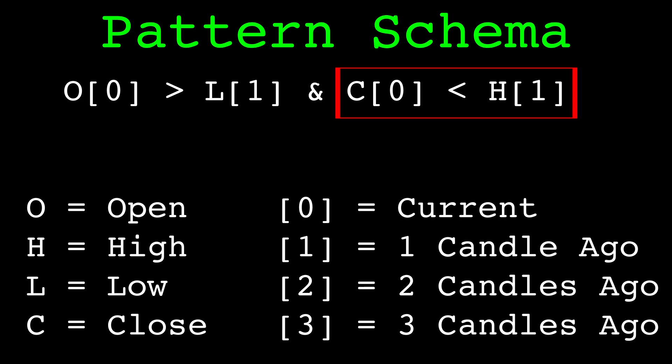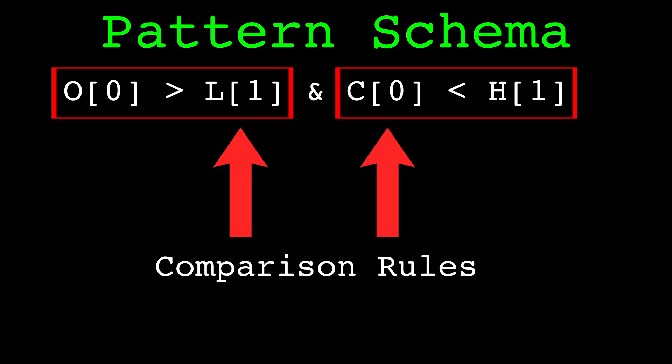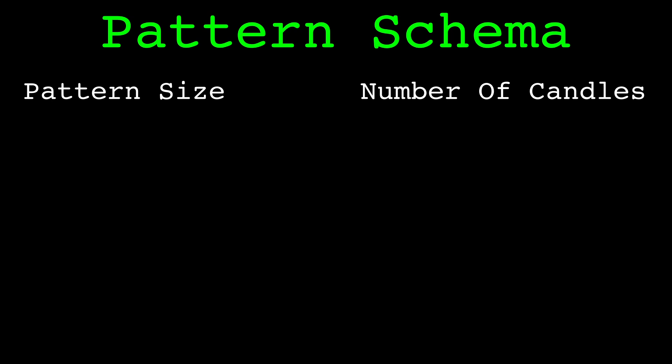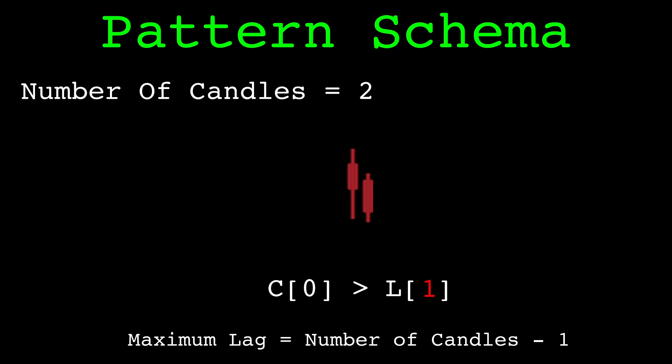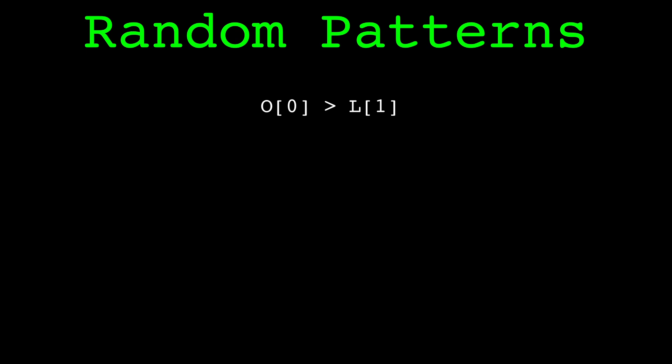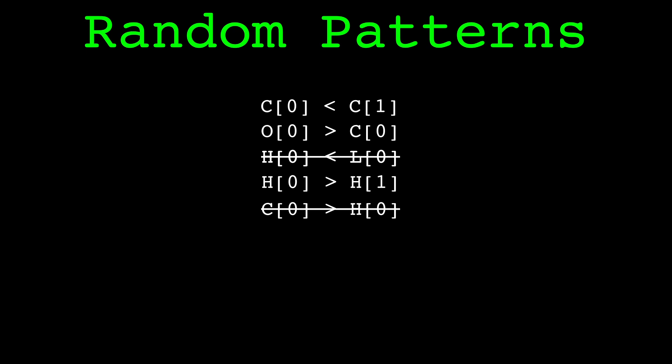We combine multiple comparison rules to build patterns. The candlestick pattern has two hyperparameters: the pattern size and the number of candles. The pattern size determines how many comparison rules will make up a pattern. The number of candles is the maximum lag value — how many of the most recent candles we will potentially consider. We generate random comparison rules and append them together to build random patterns. When generating rules, it's important to check for illogical comparisons, such as comparing the current high to the current low. If a pattern has duplicate rules, we replace them.